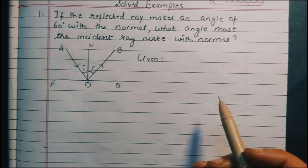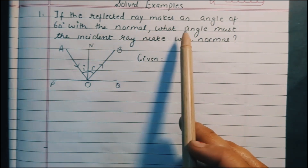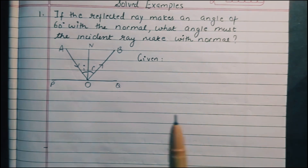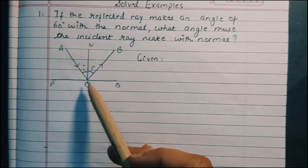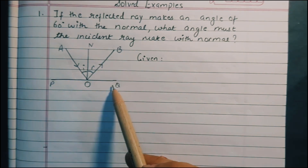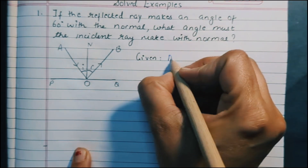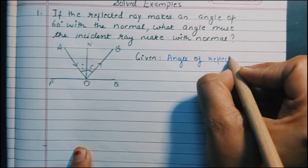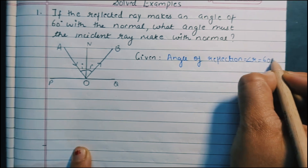The first question is: if the reflected ray makes an angle of 60 degrees with the normal, what angle must the incident ray make with the normal? In the diagram, AO is the incident ray, OB is the reflected ray, and N is the normal, which is perpendicular to the surface. The angle of reflection is equal to angle R, which is 60 degrees.